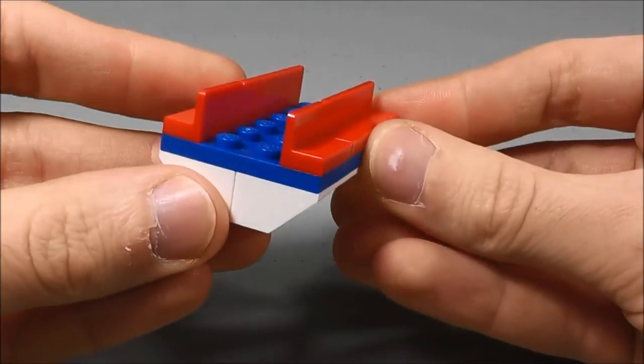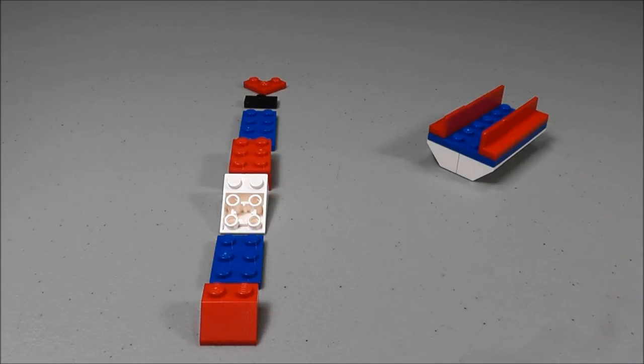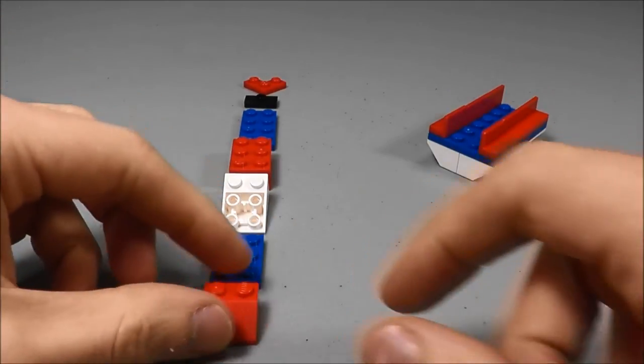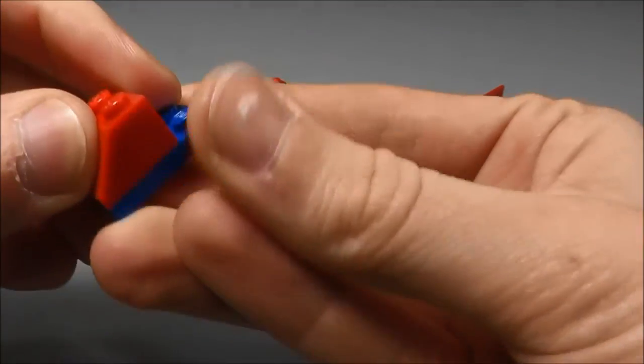Next, on step two, you'll put together the front end of the jet ski. I have all the parts laid out here in order. First thing you'll take is a slanted piece, and you're going to put that on top of this blue 3x2 like so.